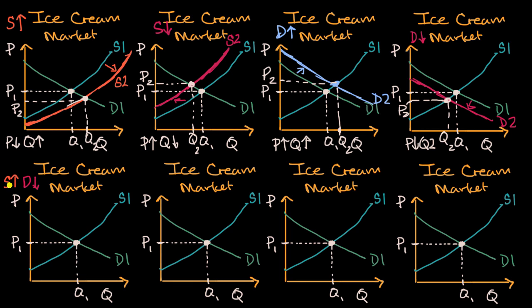So once again, maybe a major producer is entering into the market, supply goes up, and that study comes out that ice cream is less healthy than suspected, so demand goes down. What is going to happen to your equilibrium price and quantity? Pause this video and try to figure it out.